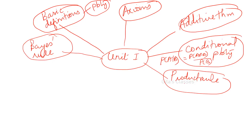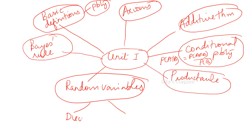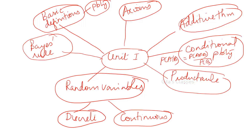Then definitions of random variables — we have two types: discrete and continuous. Remember, mean, variance, and all those calculations will be in the second unit. Here in unit one, just the definitions: what is a probability mass function (PMF) for discrete variables and probability density function (PDF) for continuous variables. For discrete we use summation (Σ), for continuous we use integration.